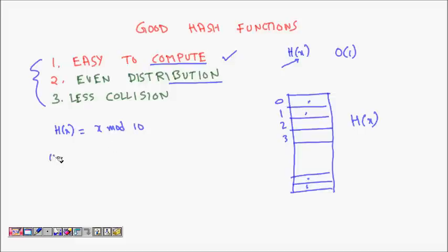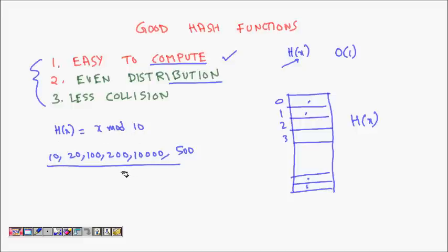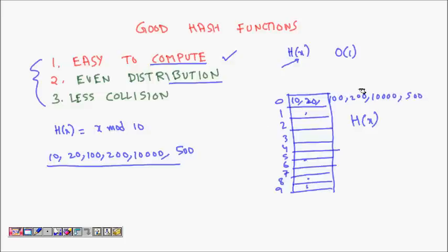For example, if the input is 10, 20, 100, 200, 10000, and 500, then x mod 10 is not evenly distributed. What happens is: 10 mod 10, 20 mod 10, 100 mod 10, 200 mod 10, 10000 mod 10, and 500 mod 10 all hash to zero. So nine out of ten cells are empty and all elements are hashing to the same slot — that's not good distribution.